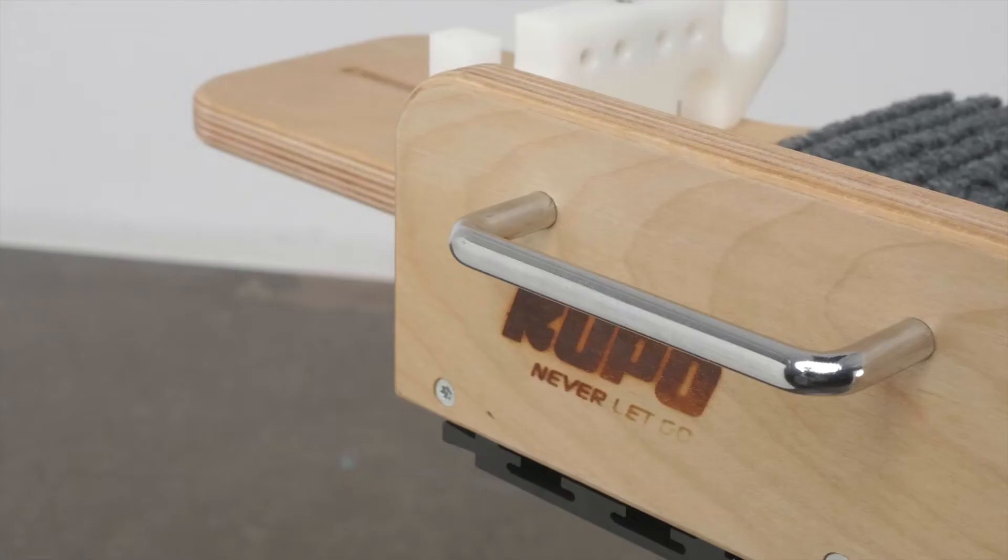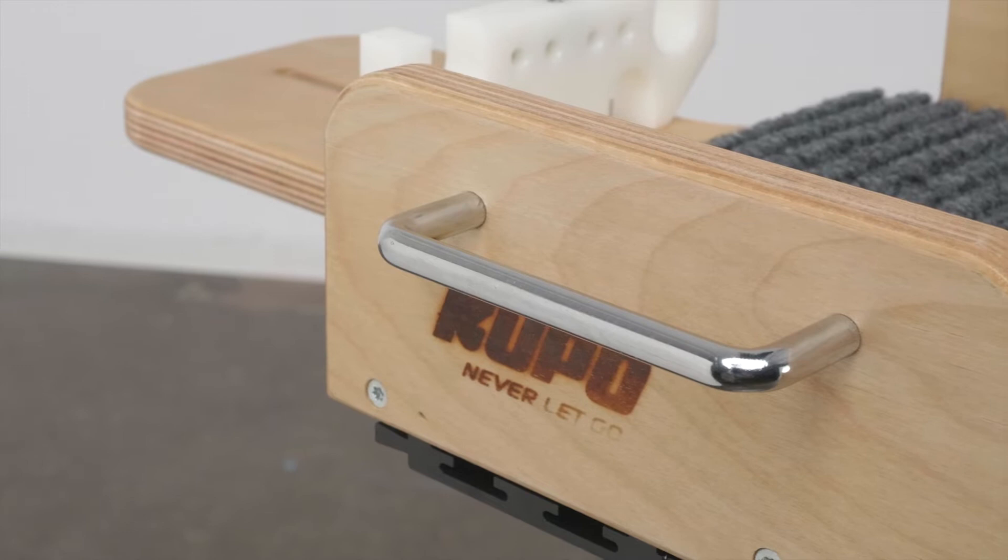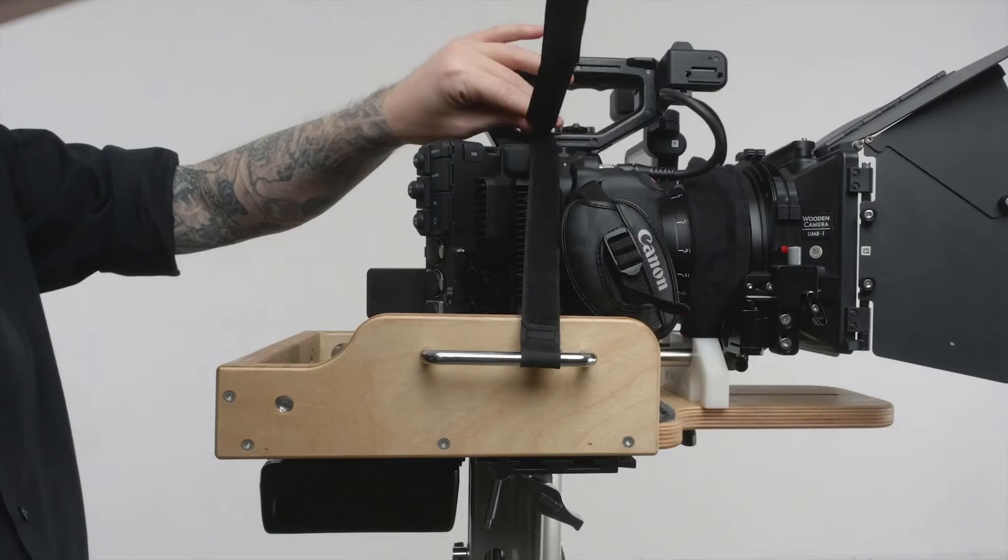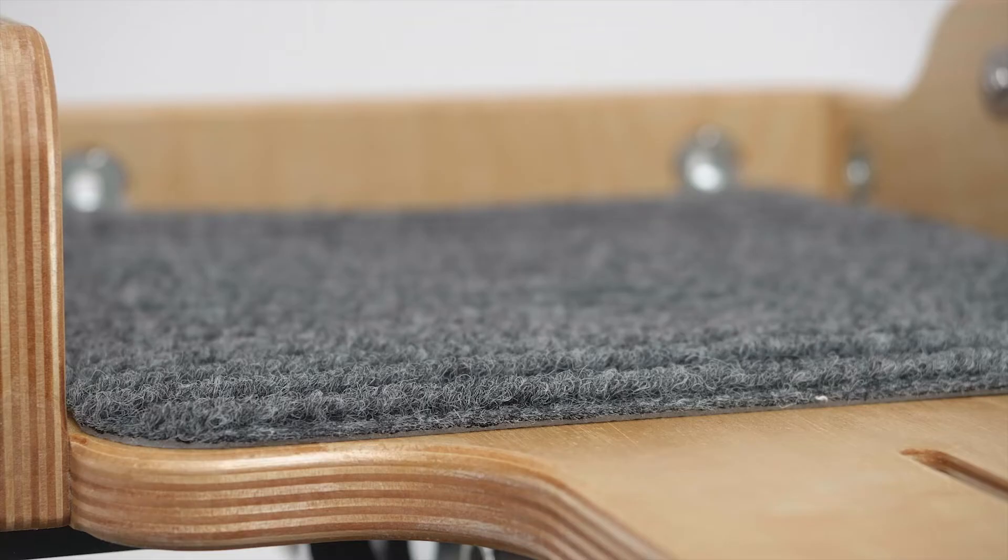The cradle is equipped with two steel handles designed for easy handling, a Velcro strap to secure the camera rig to the cradle through the side handles, and a non-slip carpet that sticks firmly to the cradle, which not only prevents it from sliding off but also protects the camera from scratches.